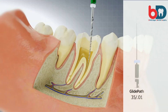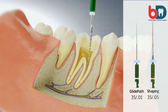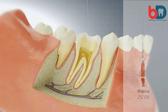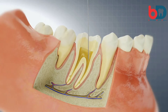Once patency is achieved, employ the corresponding Logic shaping file to shape the canal — in this case, the 3505. It is now ready for final cleaning with Bassi Clean and for obturation.